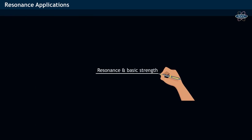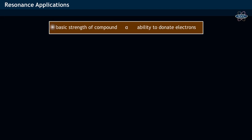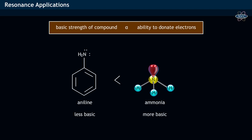Base strength and resonance. The basic strength of a compound depends on the ability of a species to donate electrons. Aniline is less basic when compared to ammonia.